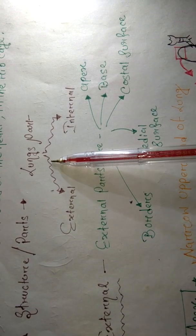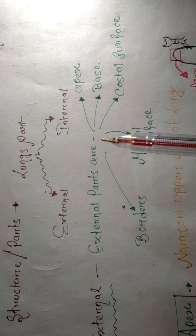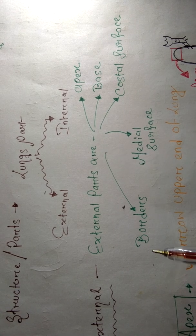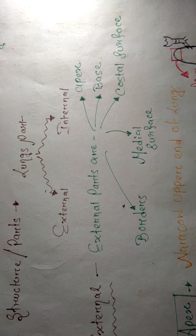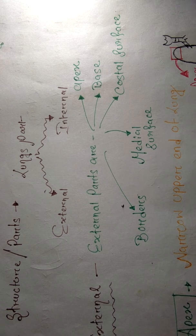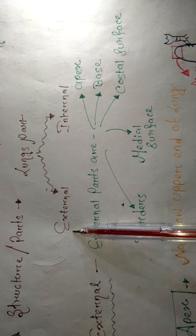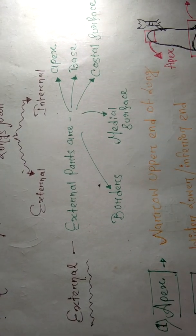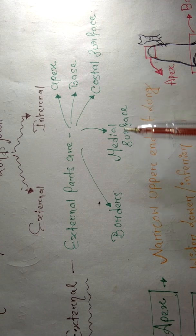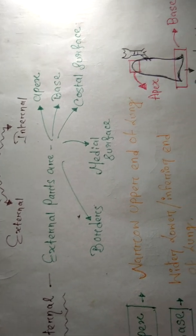Now the structure or parts of the lungs. We can study the parts of the lungs in two ways: external and internal. Externally, if we remove the lungs from our body and see from outside. Internally, if we cut the lungs and see inside. The external parts are: apex, base, costal surface, medial surface, and borders.